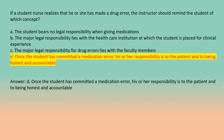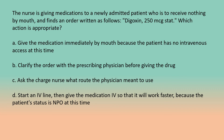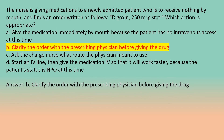The nurse is giving medications to a newly admitted patient who is to receive nothing by mouth and finds an order with the route unspecified. Which action is appropriate? A. Give the medication immediately by mouth because the patient has no intravenous access. B. Clarify the order with the prescribing physician before giving the drug. C. Ask the charge nurse what route the physician meant to use. D. Start an IV line and give the medication IV so that it will work faster because the patient is NPO. Answer: B. Clarify the order with the prescribing physician before giving the drug.